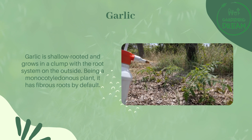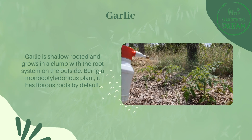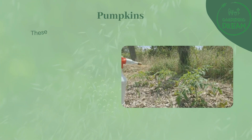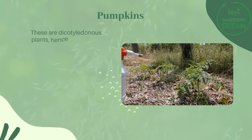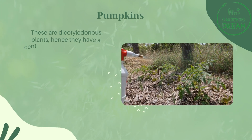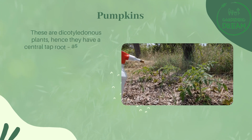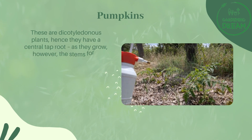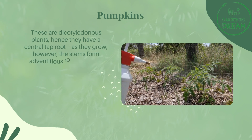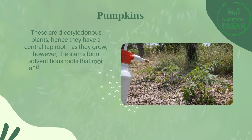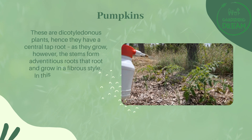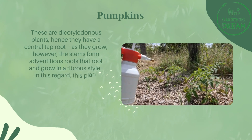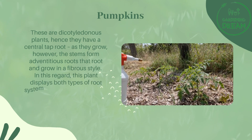Being a monocotyledonous plant, garlic has fibrous roots by default. Pumpkins are dicotyledonous plants, and hence they have a central tap root. As they grow, however, the stems form adventitious roots that root and grow in a fibrous style.